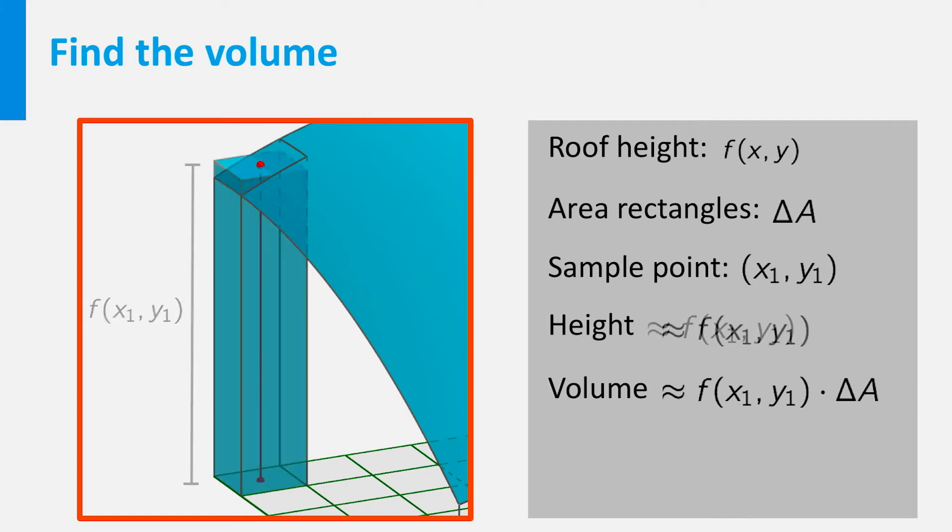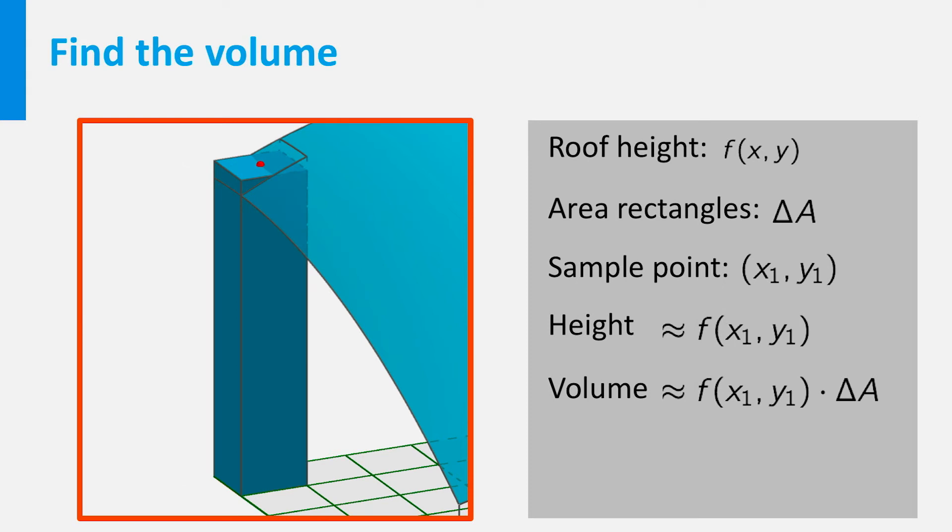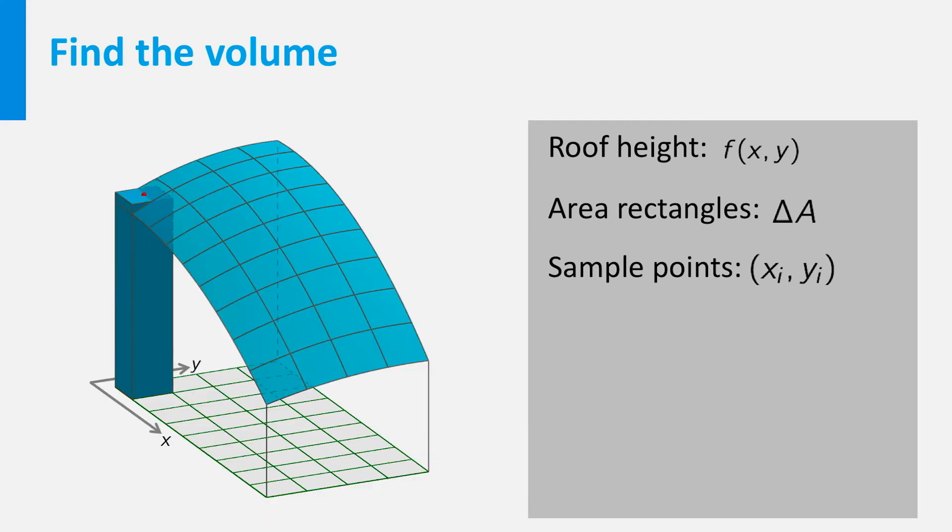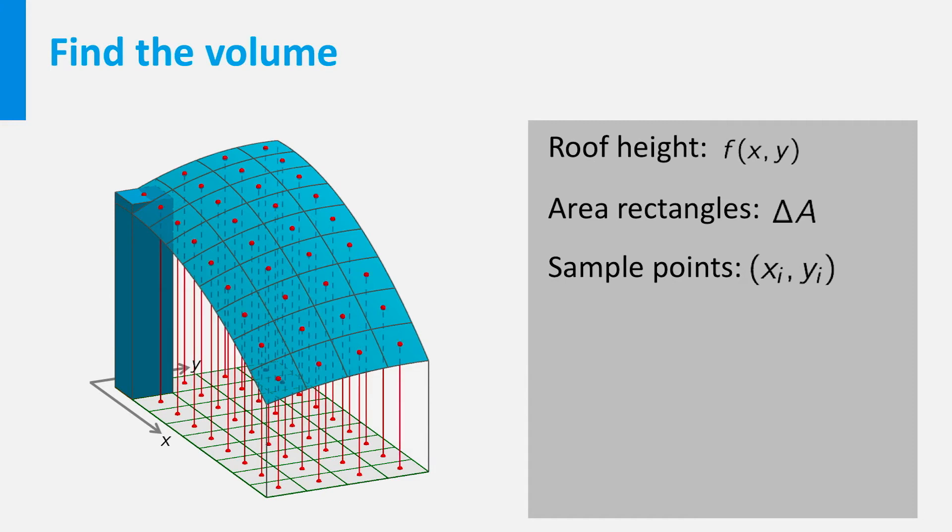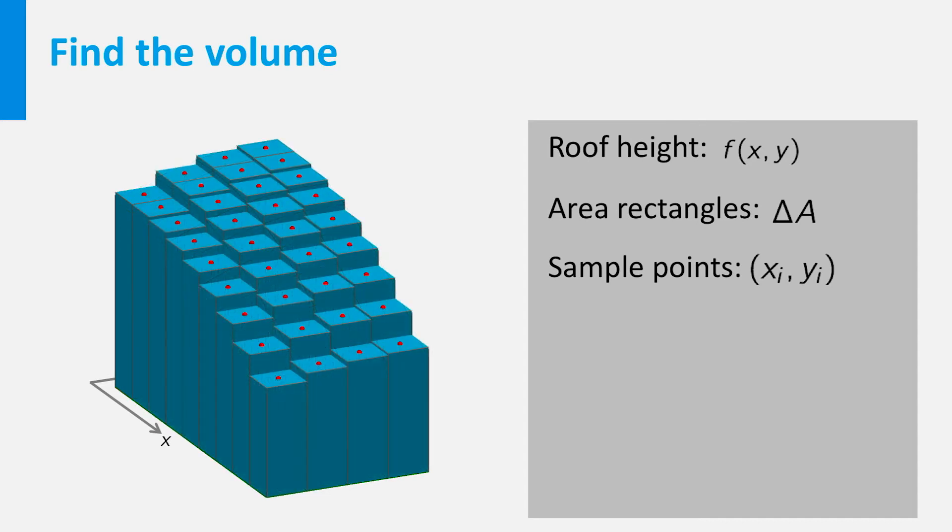And geometrically, this product represents the volume of a box with base delta A and height f of x1, y1. This we can repeat for each of the small rectangles. Pick a sample point, find the height of the roof over each sample point, and draw a box with that height and the rectangle as base. Then the total volume is approximately equal to the sum of the volumes of the boxes.